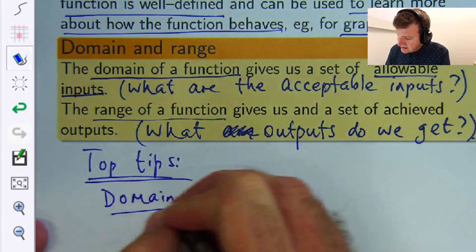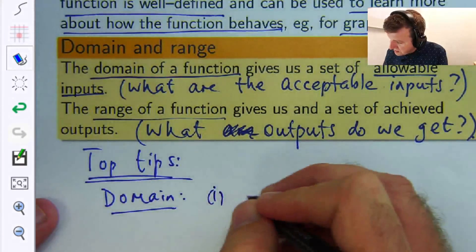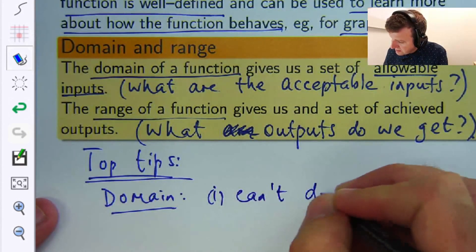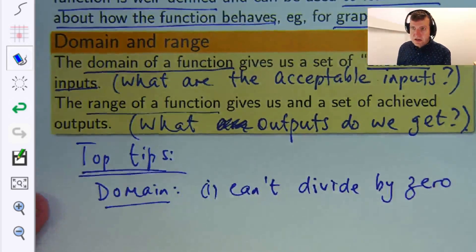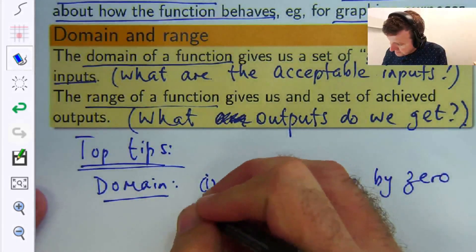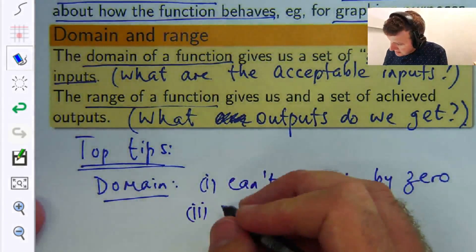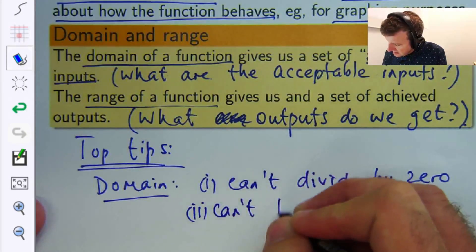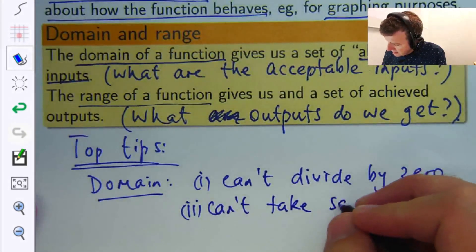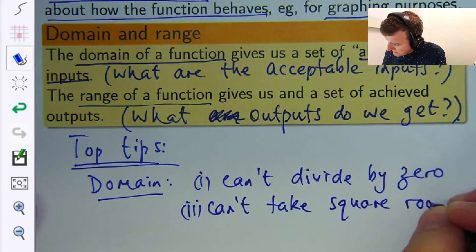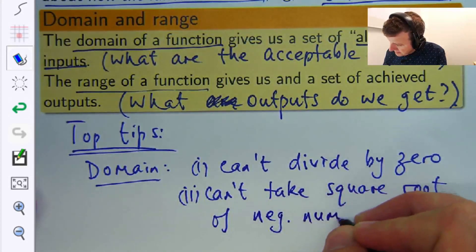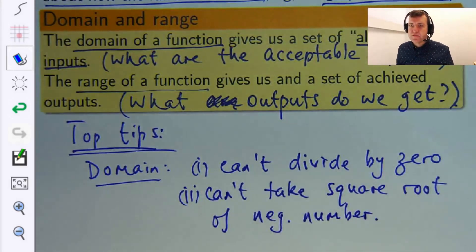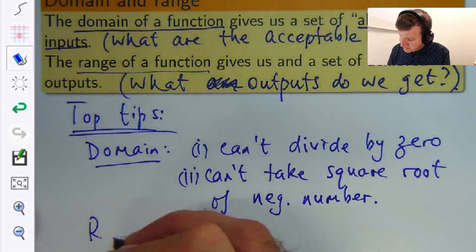So for the domain: with functions you cannot divide by zero in mathematics, so that's one important thing. And secondly you can't take the square root of a negative number. I'll show you how these work in practice in various examples. I'll put this into context in a minute. So that's two top tips for the domain.